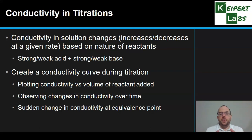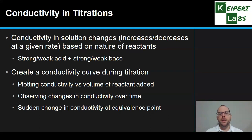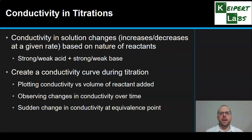We start with a particular reactant in the conical flask, and as we add more of the reactant from the burette, we observe changes in conductivity over time. There will also be sudden changes of conductivity at the equivalence point, which we can look for, especially if we're plotting this in real time. That allows us to determine the equivalence point when we look at the data or graph afterwards.